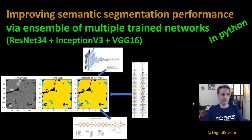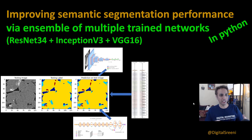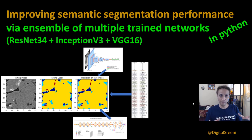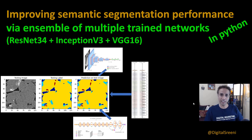Hey guys, this is Srini and welcome back. In this video let's continue the topic of ensembling multiple trained networks — the one we started in the last video for image classification. Now let's actually do pixel classification, which is semantic segmentation. Two or three videos ago we looked at a whole bunch of U-Net and semantic segmentation, so consider this a follow-up of that discussion, where we ended by looking at backbones such as ResNet, Inception, and VGG for U-Net.